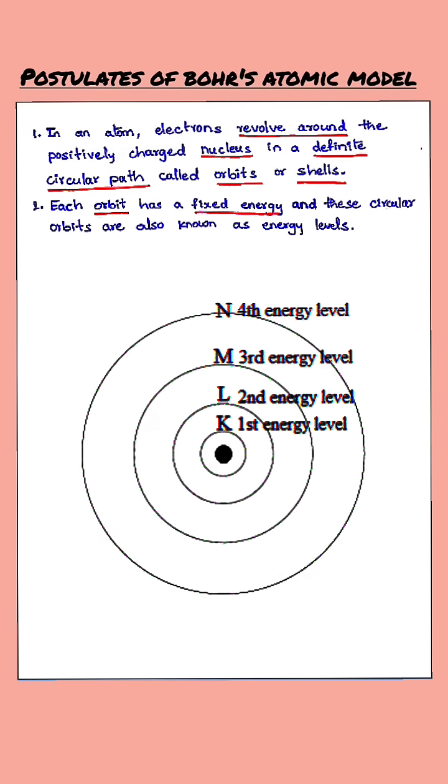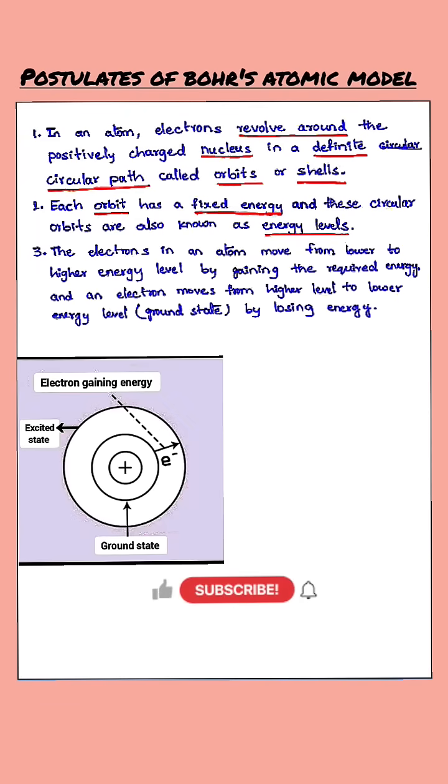Due to the electrons revolving in those fixed paths, their paths can be called as energy levels of those particular electrons. Now the third postulate is if an electron wants to move from lower energy level to higher energy level, then it needs to gain some required energy to move into excited state.